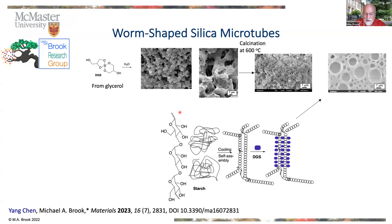We wondered if other templating materials like starch, which other people have used, could be used as a template for silica. When you cook starch, you get a solution. When you cool it down — as anybody knows who's taken last night's spaghetti out of the fridge — it has a different kind of structure. When we incorporated that cooked structure with the silicone, the glycerol silane, we ended up with a very unusual kind of pattern on the surface.